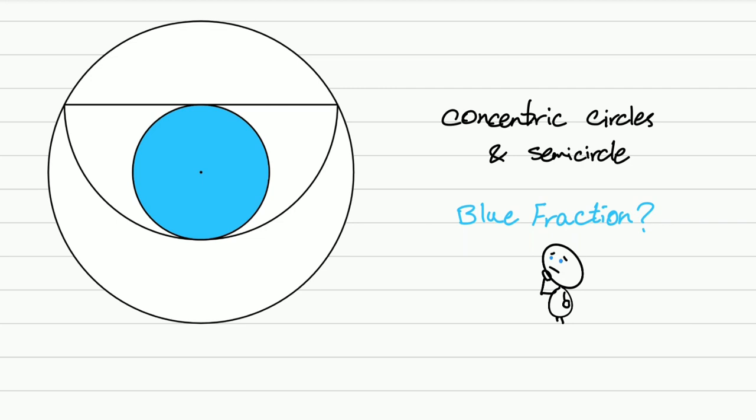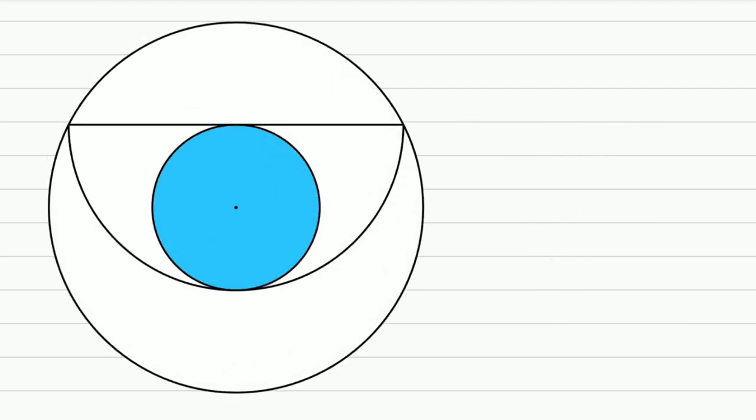So it's actually quite simple. Let's see how we can solve this. We start by adding this diameter of the blue circle, which is perpendicular to the diameter of the semicircle. Let's call this R and R. So the radius of the semicircle is 2 times R. That means this side is 2 times R as well.